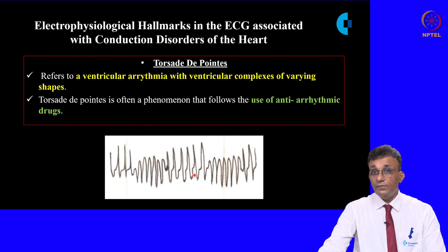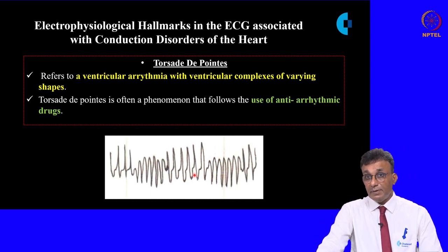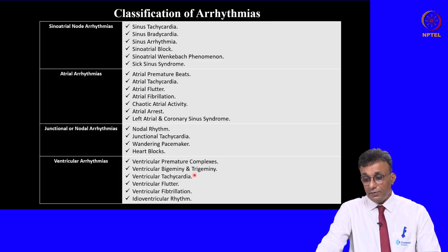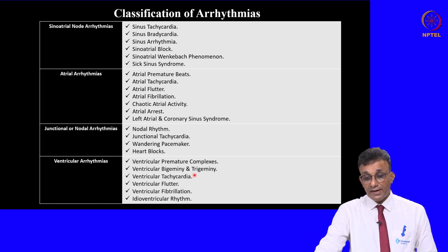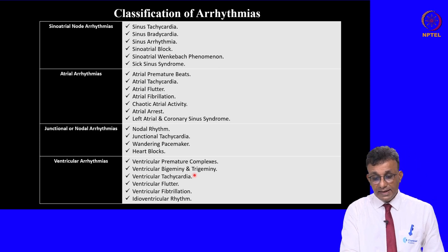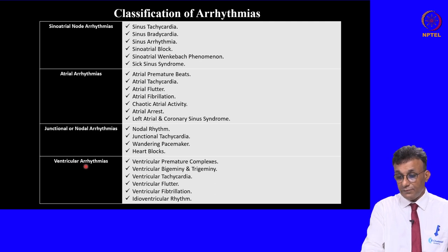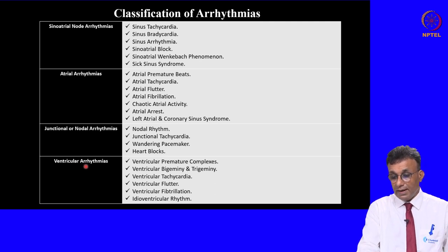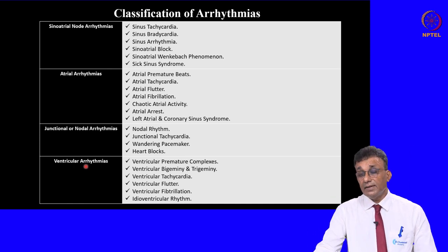Having provided an update on certain electrophysiological disturbances that can be picked up in the ECG, this presentation concludes with a primary classification of arrhythmias. Arrhythmias are classified as sinoatrial node arrhythmias, atrial arrhythmias, junctional or nodal arrhythmias, and ventricular arrhythmias. Examples of each group are listed and will be described by clinicians in subsequent sessions.